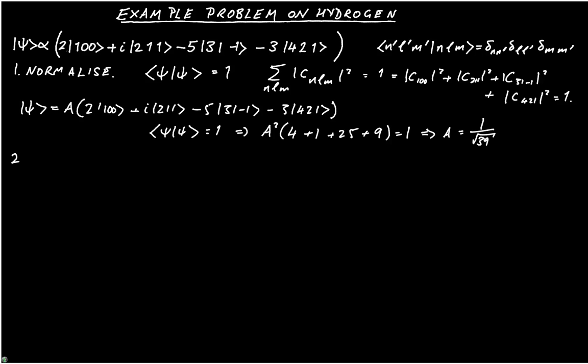The second question that we're going to answer is the probability of observing the system in the ground state. Now the ground state is simply |100⟩, so the probability of observing the system in that state is the square modulus of C_100, which in this case is 4 over 39.